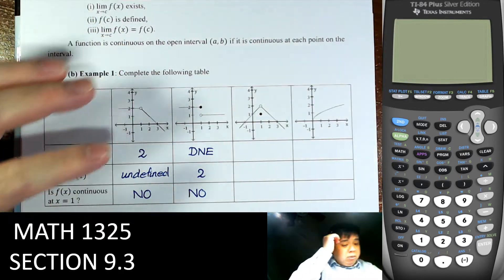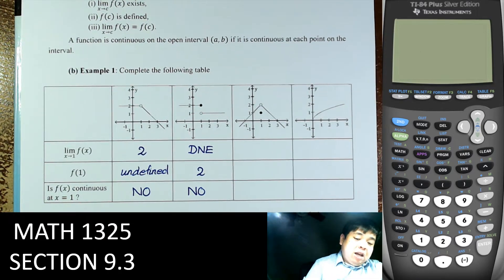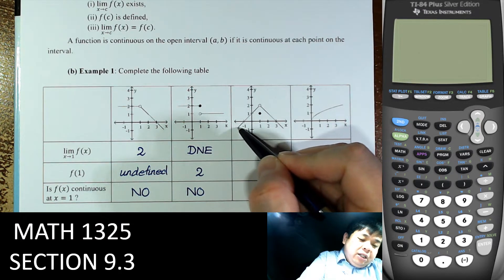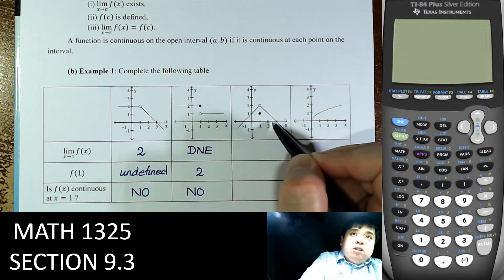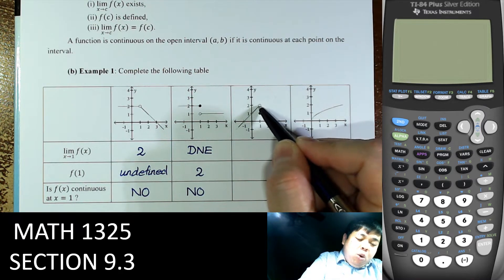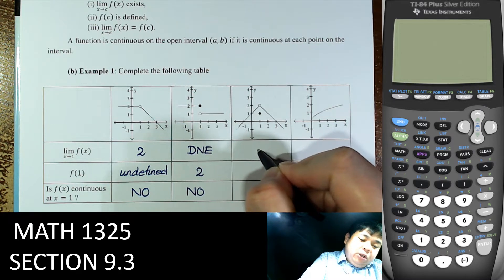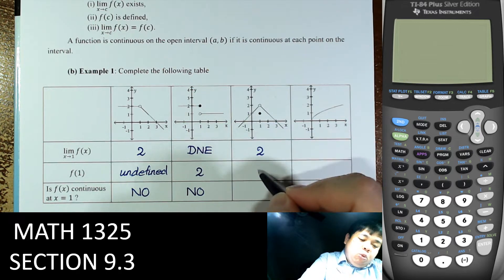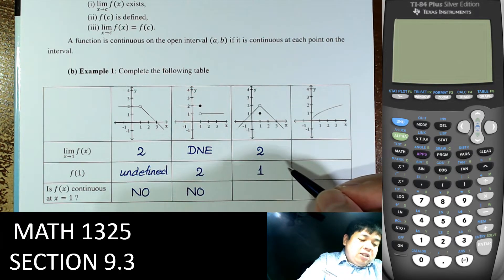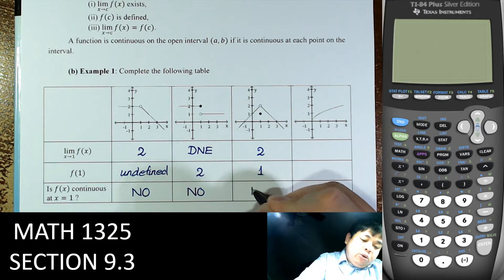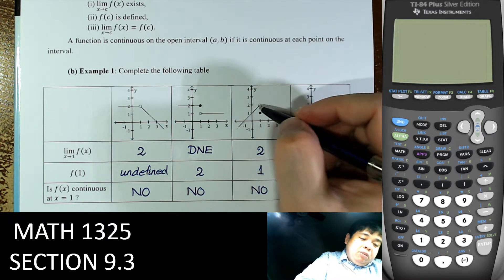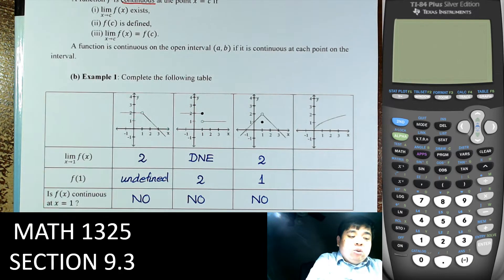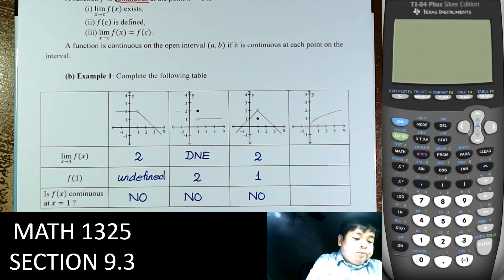All three criteria need to happen for the function to be continuous at that point. For this next graph, the limit when x = 1 from the left or right approaches this point, so it equals 2. The value of the function is this dot, which is 1. And is the function continuous? Still no, because the value of the function is not equal to the limit of the function at that point.